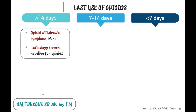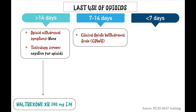If a patient is presenting between 7 to 14 days, this is more clinically relevant because more evaluation is required. You always begin with a scale to monitor withdrawal symptoms. The most commonly used one is COWS — Clinical Opiate Withdrawal Scale. I will discuss each item in the scale in a few minutes, but let me finish this table first.